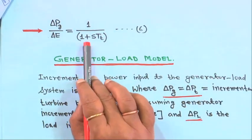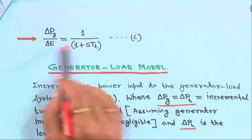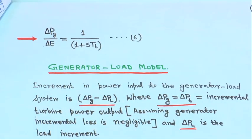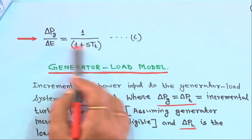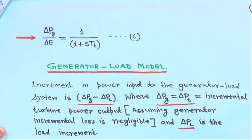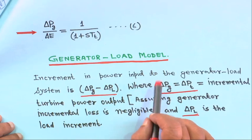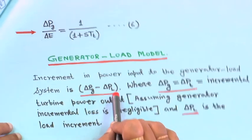So the turbine model gives us the relationship between delta P_G and delta E. For a non-reheat turbine it is 1/(1+sT_T), and for a reheat turbine it is (1 + s·K_R·T_R) / [(1+sT_T)(1+sT_R)], where K_R is the reheat coefficient — the fraction of power generated in the high pressure cylinder. This completes the turbine model section. Next is the generator load model.